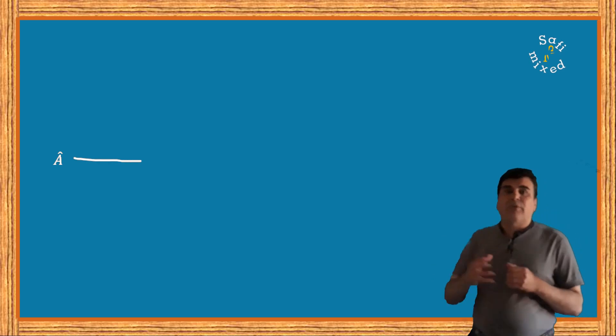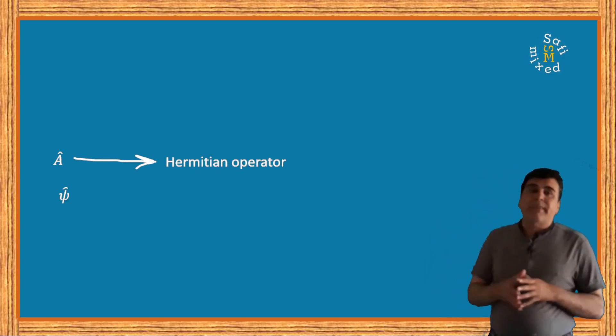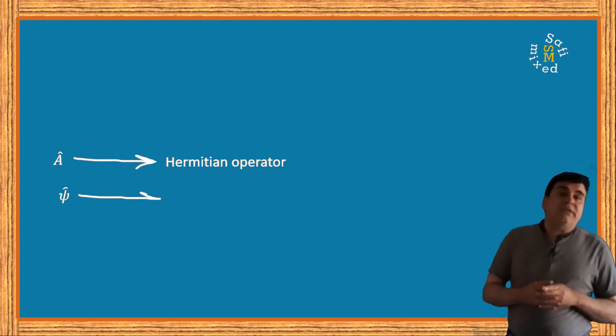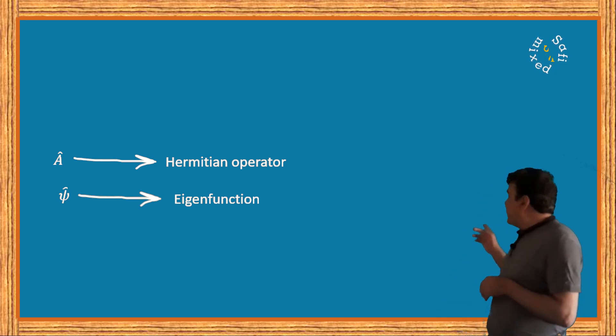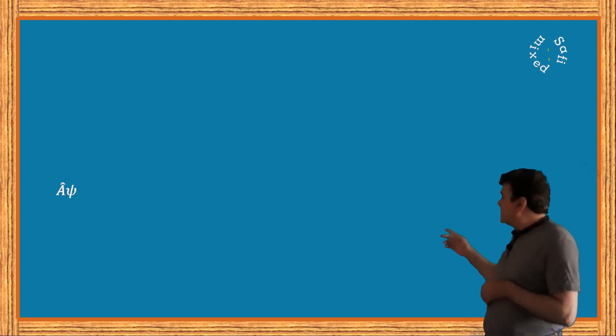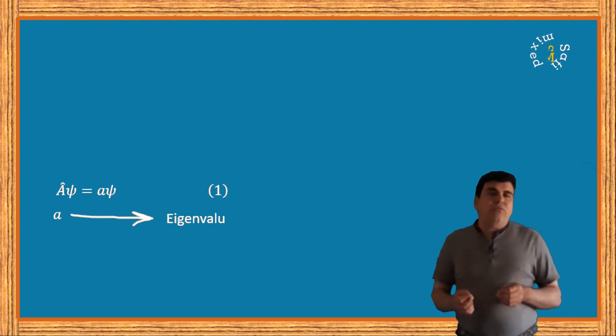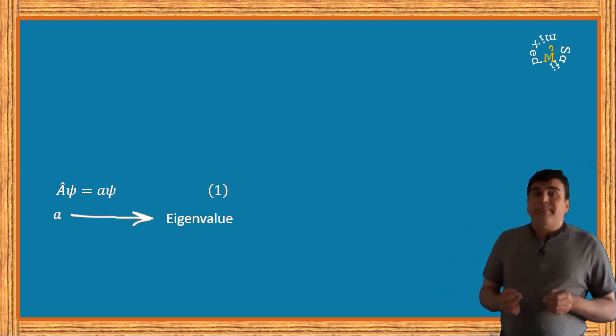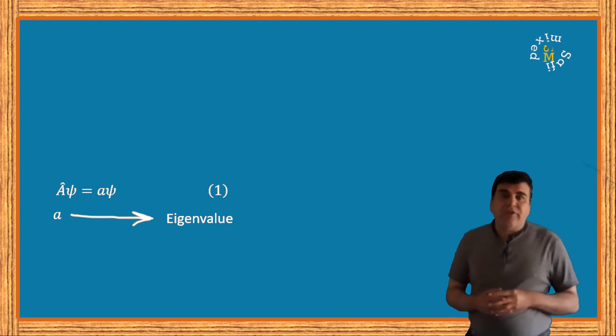Let us consider that A be a Hermitian operator with an eigenfunction ψ. Then as per the condition of eigenvalue equation we can write: operator A applied to this function ψ equals a times ψ, where the lowercase a is called an eigenvalue of the operator A.